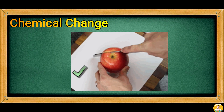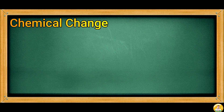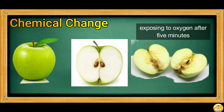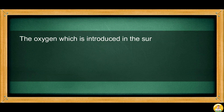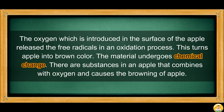You can explore chemical change by observing an apple. Cut it into two and expose it to oxygen in the air. Observe the picture showing the uncut and cut apple. What did you observe in its color after cutting the apple and exposing it to oxygen for five minutes? If you observe that it changes from whitish to brownish color, then it undergoes chemical change.